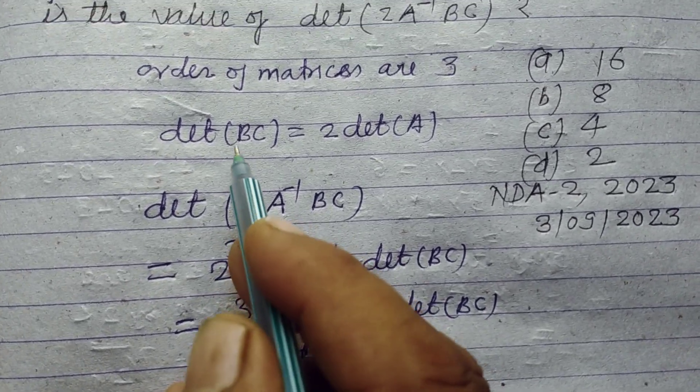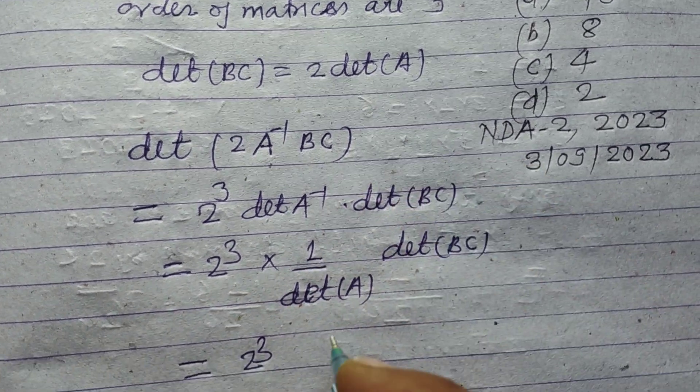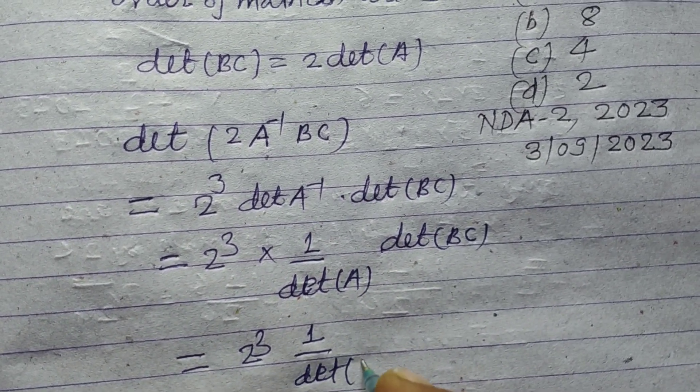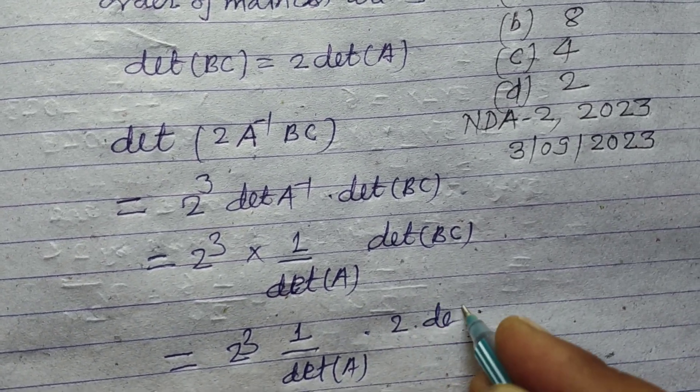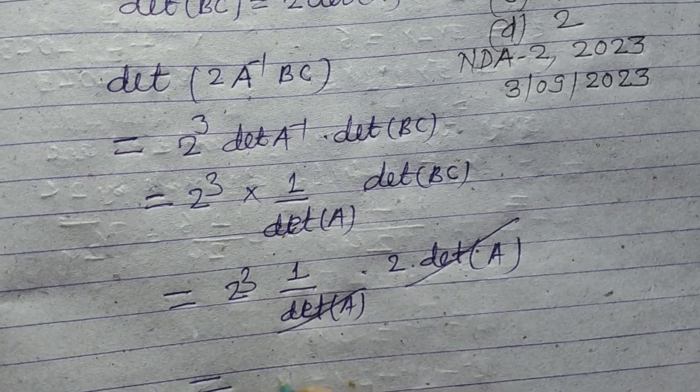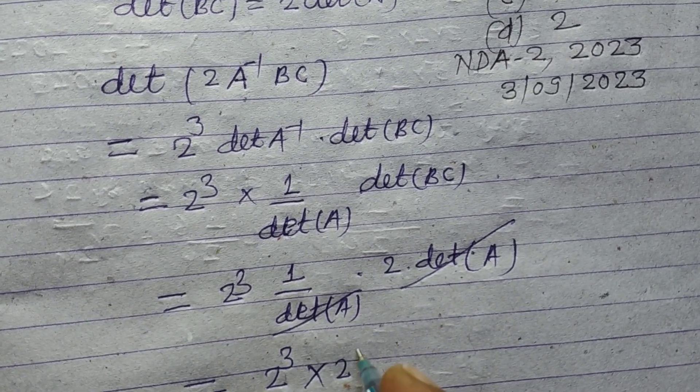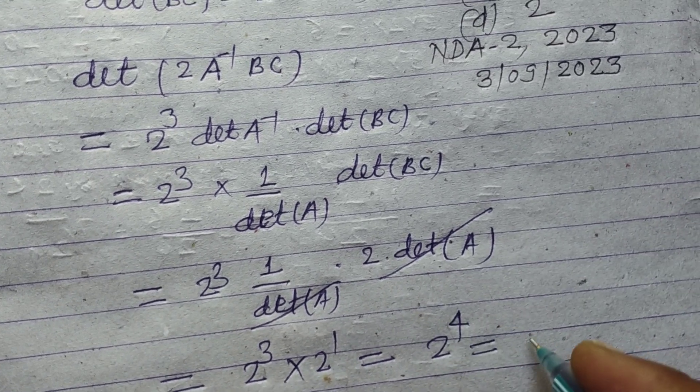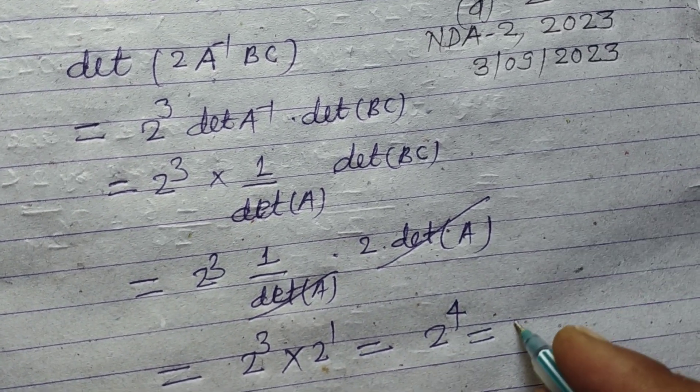Here it is given that determinant BC equals 2 times determinant A. So this cancels out. We get 2 to the power 3 times 2, which is 2 to the power 4, and this equals 16.